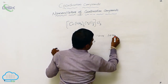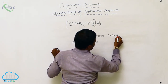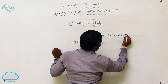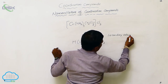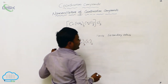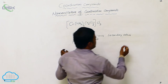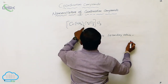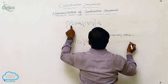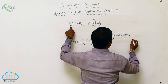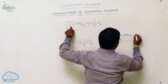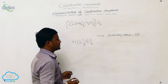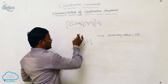What is secondary valency? The valency satisfied by neutral species or negative species is called secondary valency. Due to the presence of three ammonia and three water molecules, which each form a single bond with chromium, the secondary valency is six in this case.